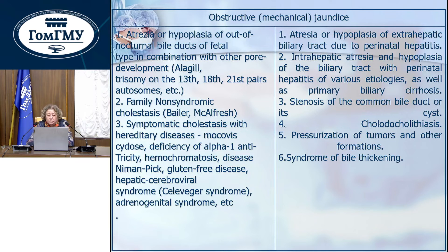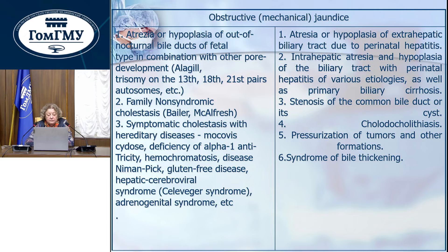Obstructive or mechanical jaundice: hereditary forms include atresia or hypoplasia of extrahepatic bile ducts of fetal type in combination with other malformations, Alagille syndrome, trisomy of chromosome 25 pairs of autosomes, and so on. Family non-syndromic cholestasis is also included.